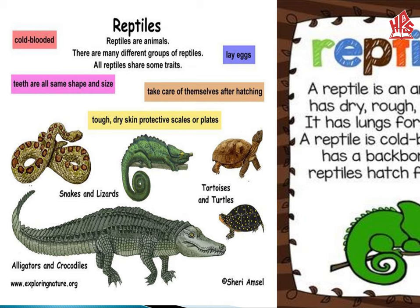The main characteristics of reptiles are that they are cold-blooded, they lay eggs, and they have tough dry skin protected with scales and plates. Some examples of reptiles are snakes and lizards, tortoises and turtles, and alligators and crocodiles.